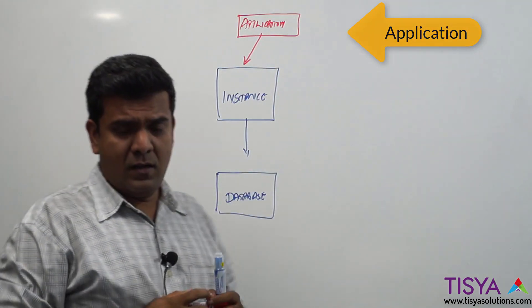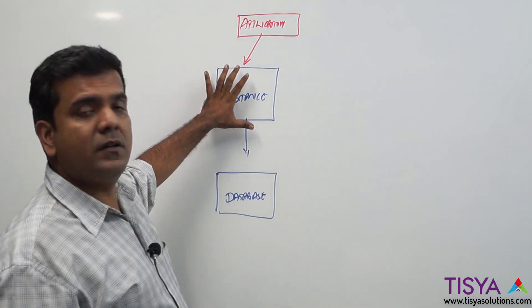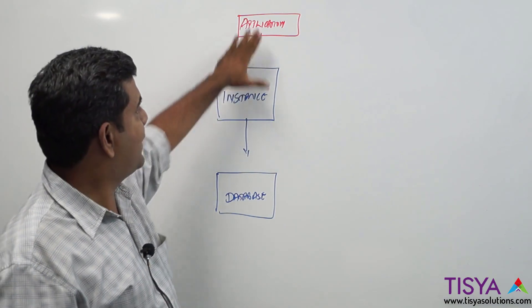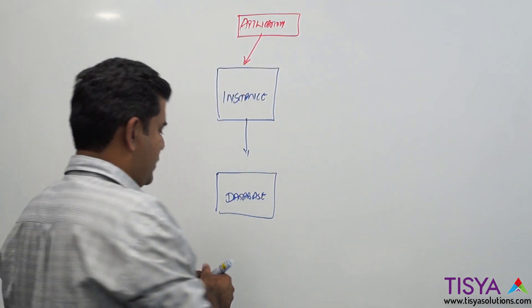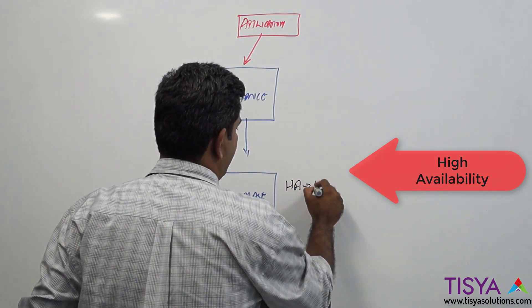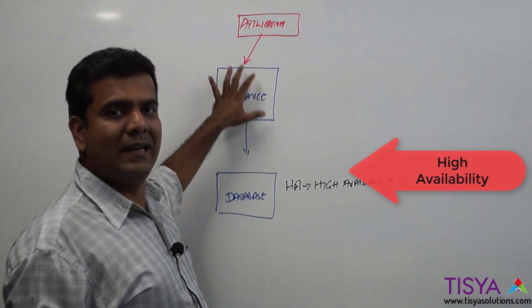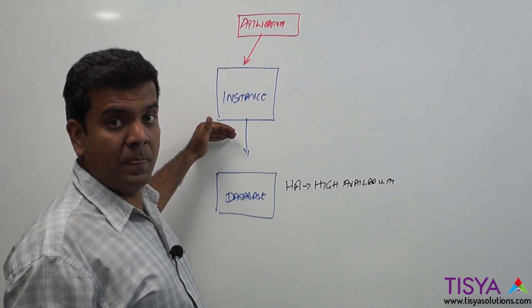Now, what if this computer goes down? The instance is gone and your application loses connectivity. This is number one, where we are talking about availability, in other words called as HA. In case my node in which my instance is running goes down, my operating system goes down, network connectivity goes down, or if my instance crashes, my application loses connectivity to the database.